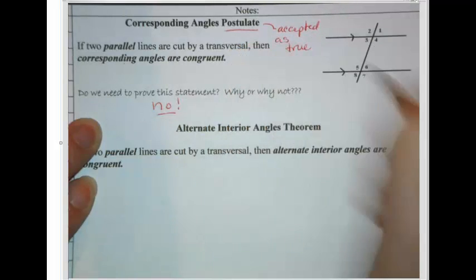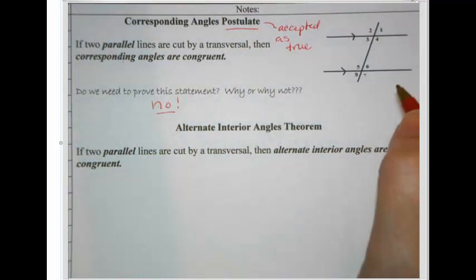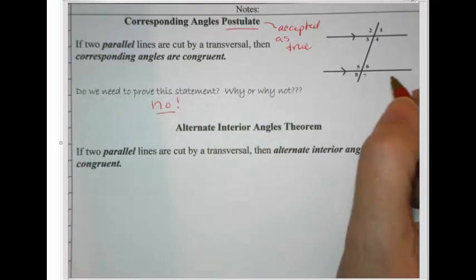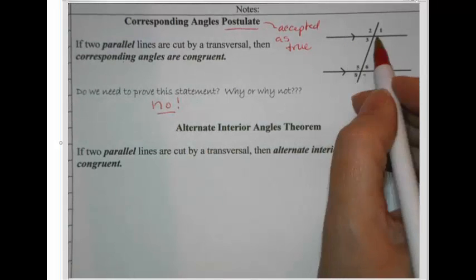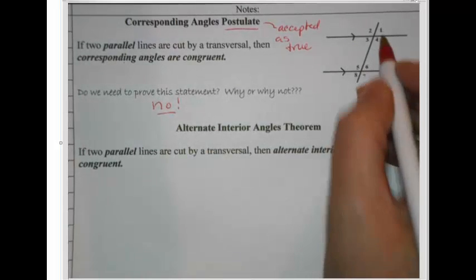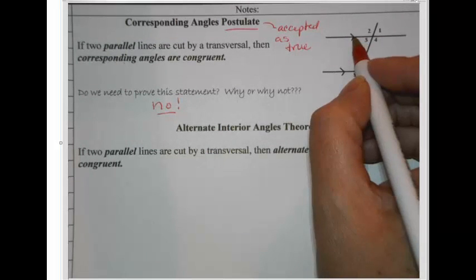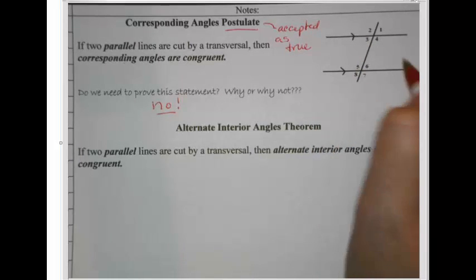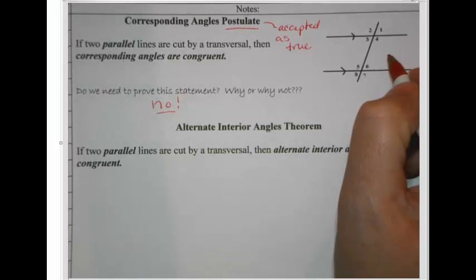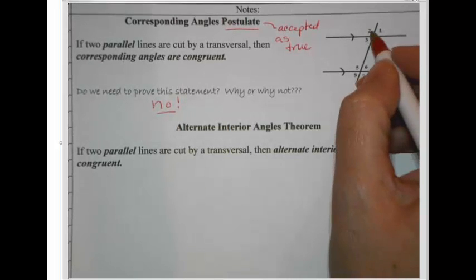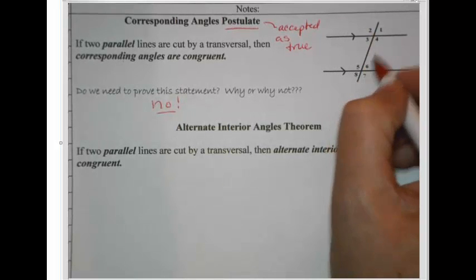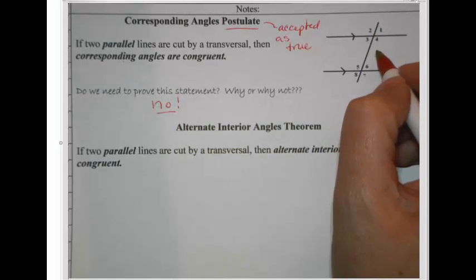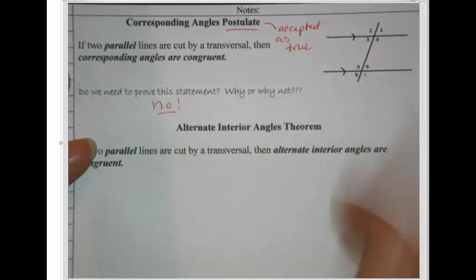Every time we prove something, we have to have some place to begin. It's pretty obvious when you look at parallel lines that if this line was turned just a little bit, it would affect the angle size here, which would in turn make these not match. So having parallel lines makes the corresponding angles congruent is something we just accept as true and go from there.